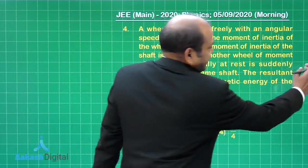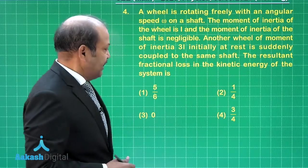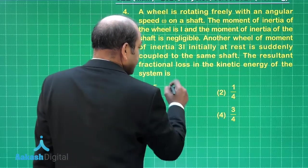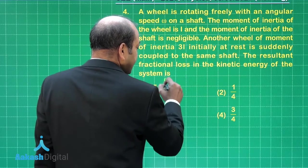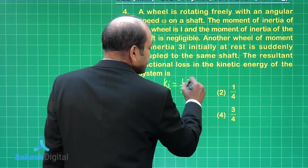If we look at the expression for kinetic energy initially, that kinetic energy is half I omega square. Let us call it k_I. So we have k_I as half I omega square.